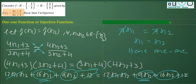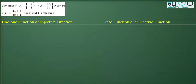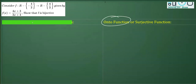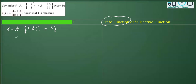Now once we have proved this function as one-one, we are going to prove it as onto. For onto, we will consider f(x) = y. In this function I am going to replace f(x) with y, so we get y = (4x + 3)/(3x + 4).